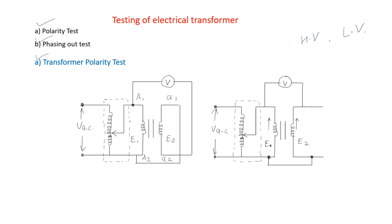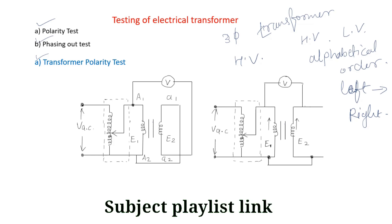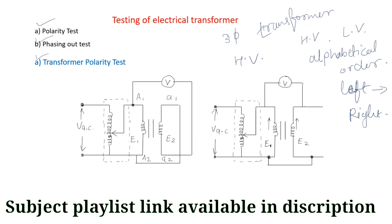For a three phase transformer viewed from HV side, the arrangement of both sets of terminals shall be in alphabetical order from left to right. So when talking about three phase transformer, if we see from HV side, the arrangement of both sets of terminals shall be in alphabetical order from left to right.